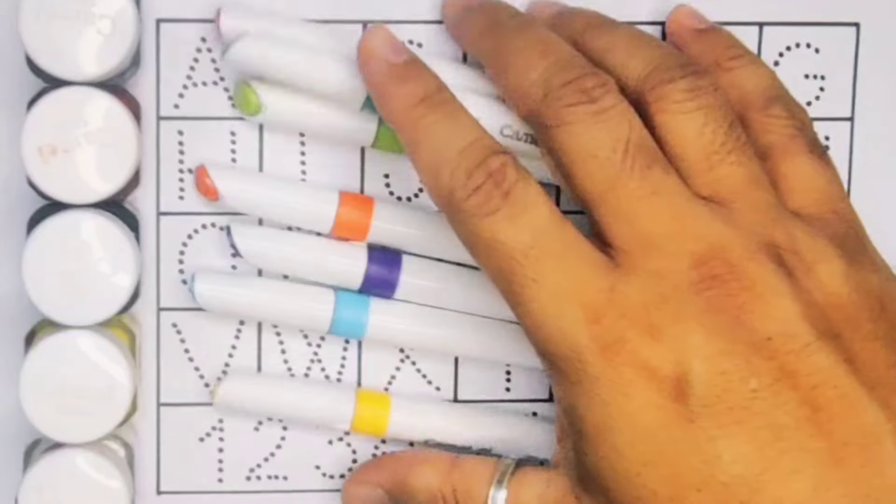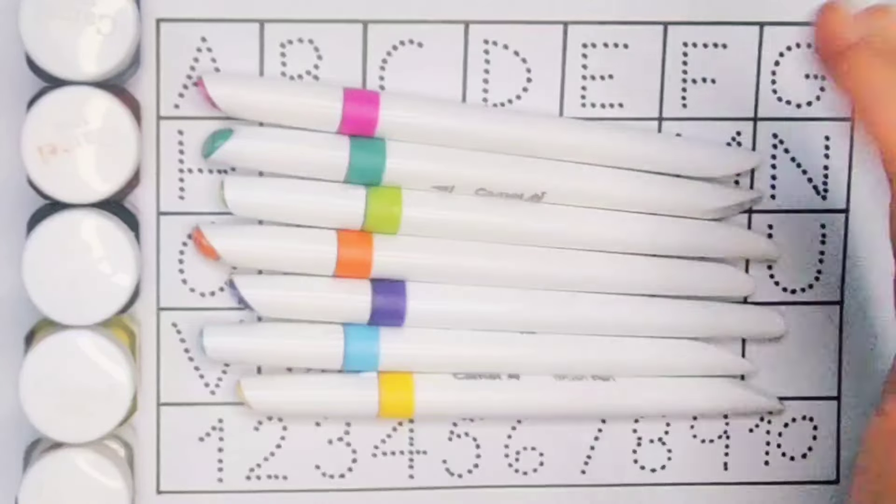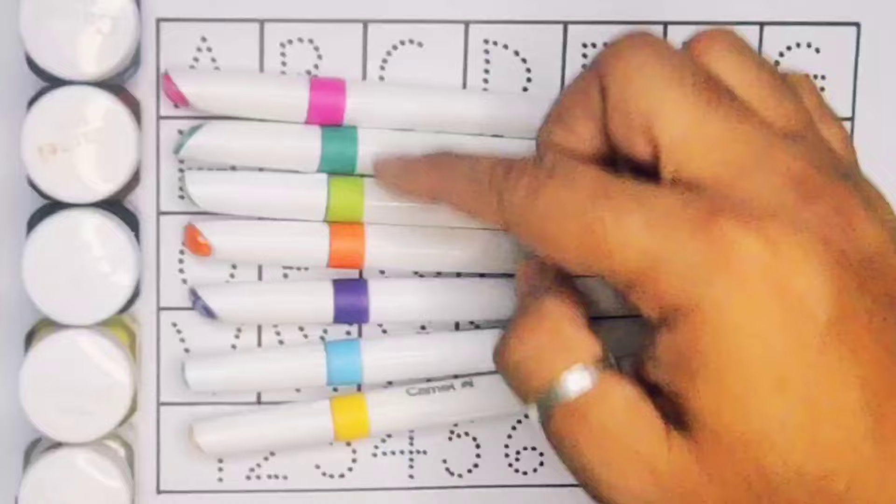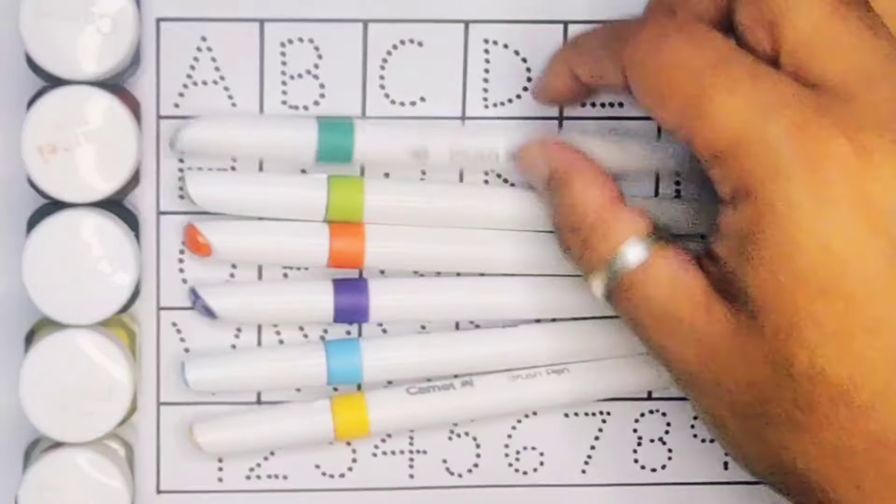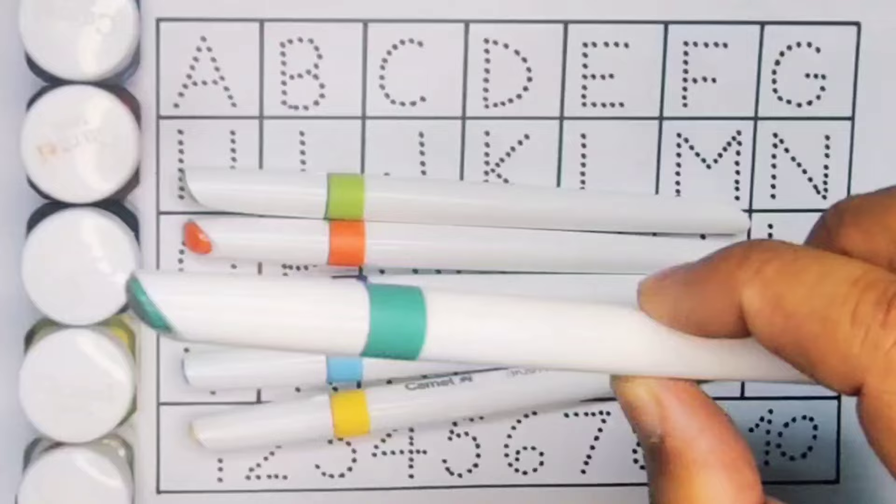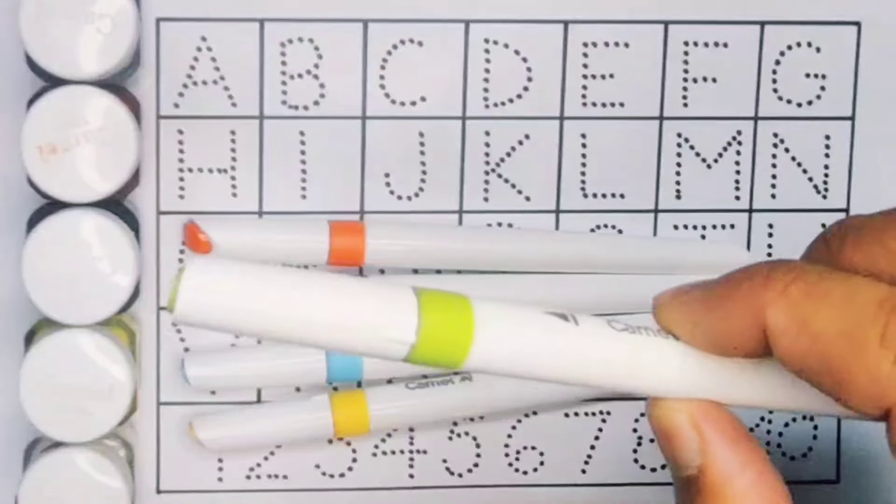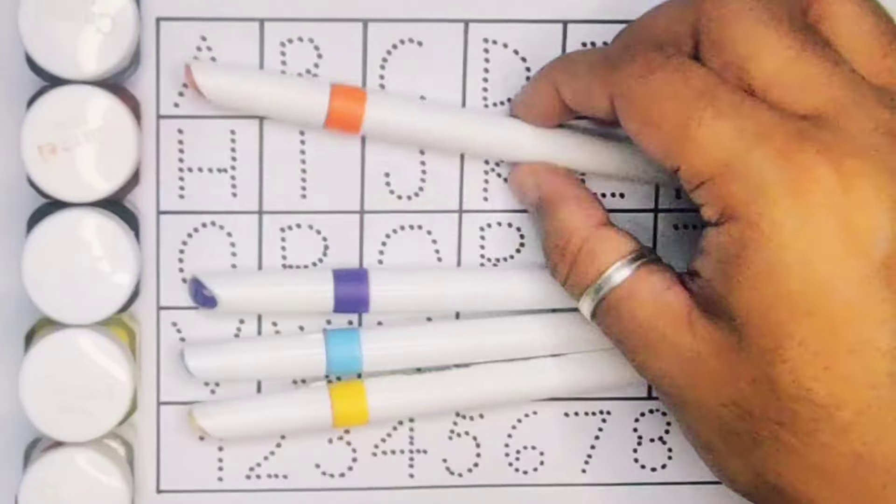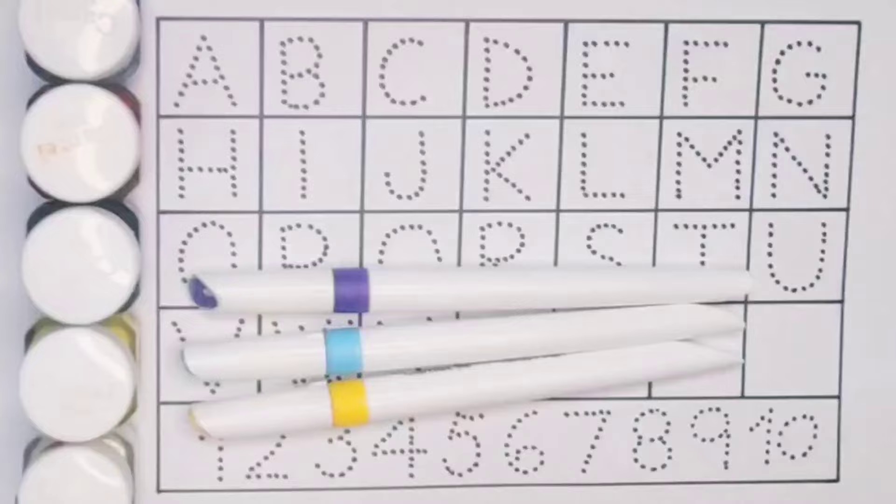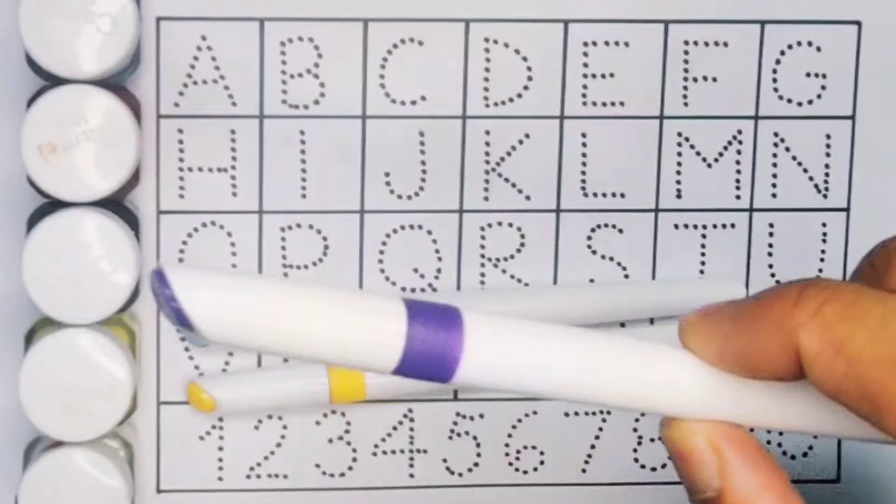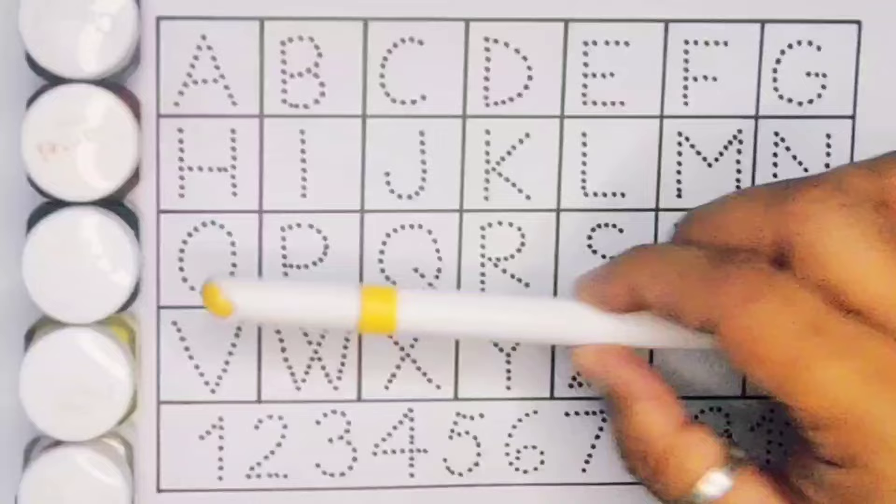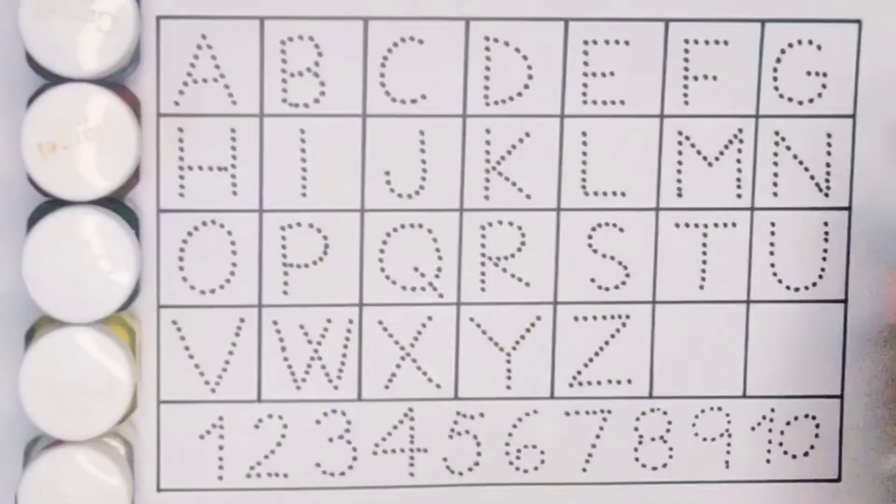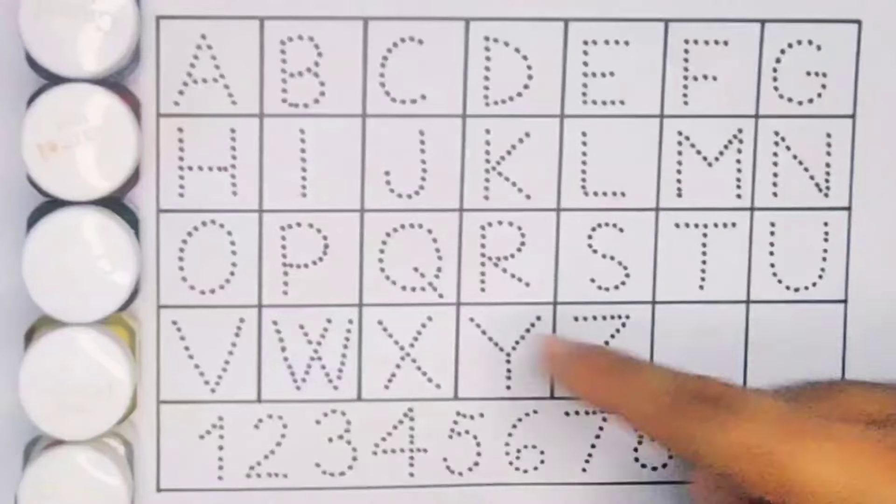Hello kids, welcome to my new video. First we are going to know the colors name: pink color, green color, light green color, orange color, purple color, sky blue color, and yellow color.